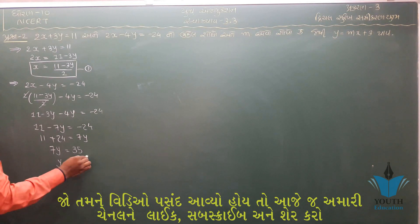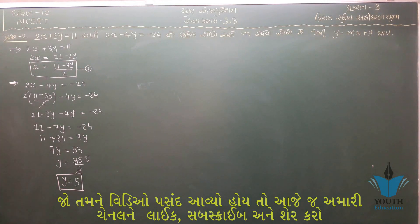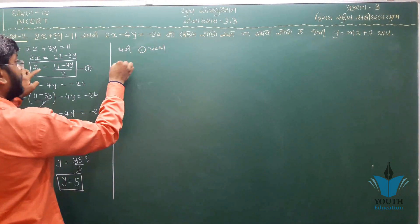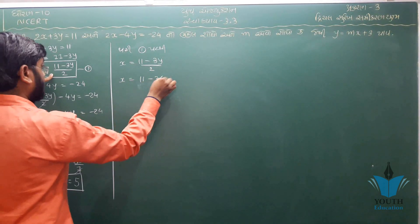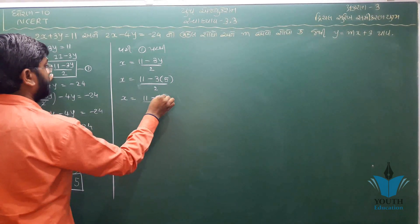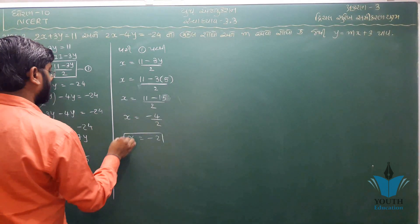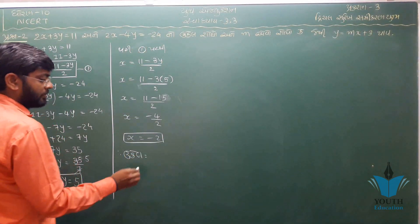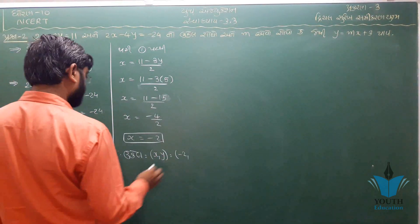So 7y equals 35 divided by 7, giving y equals 5. Substituting back into equation 1 to find x: x equals (11 minus 3y) divided by 2. Putting y equals 5: x equals (11 minus 15) divided by 2, which gives x equals minus 2.